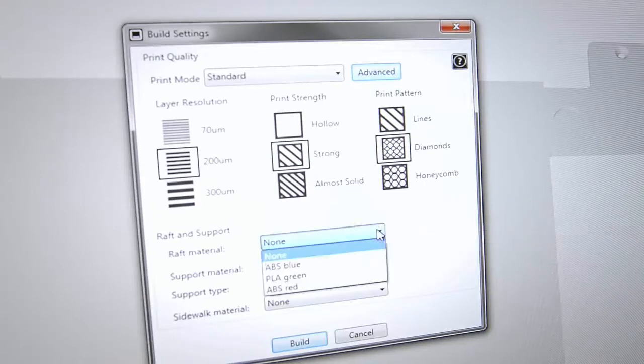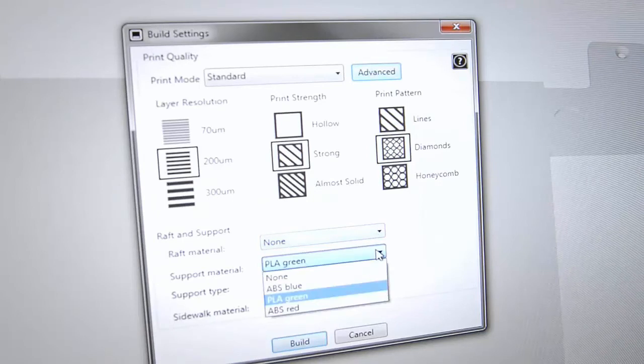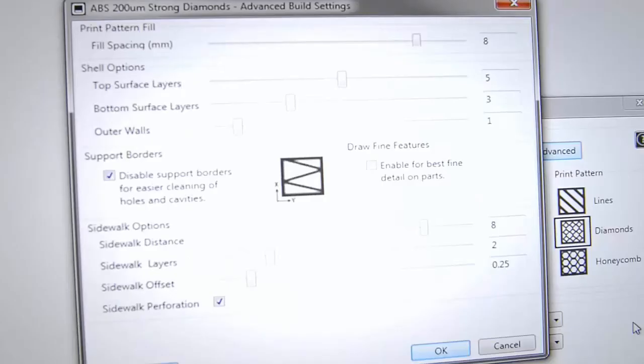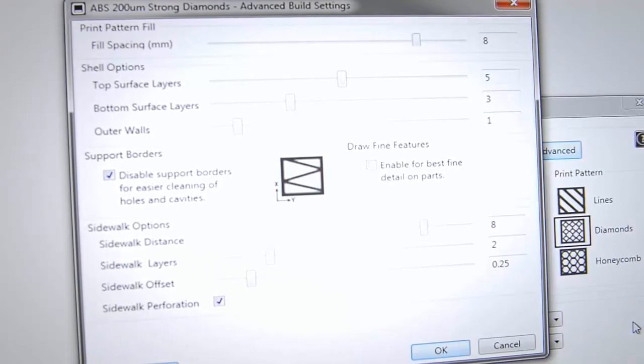Also, we noted control over the raft materials, as well as support type using either points or lines to attach the support material. Advanced settings gives even a finer level of control in terms of the layers and the finishing options available to you.